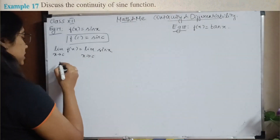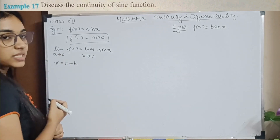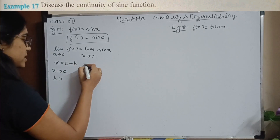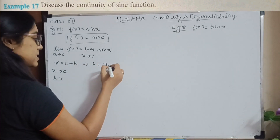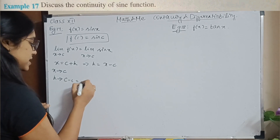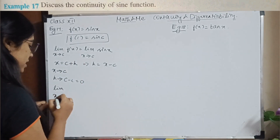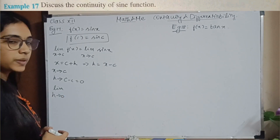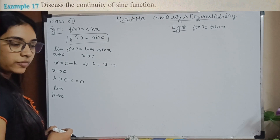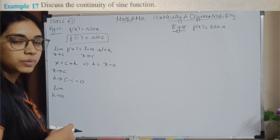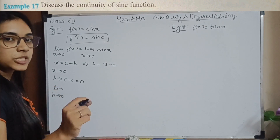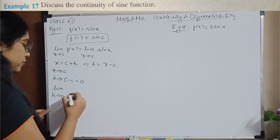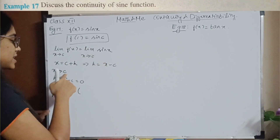Instead of directly taking sin X, I am going to replace X with C plus H. The condition is: when X tends to C, H = X minus C tends to 0. So I change the variable: the limit as X tends to C becomes the limit as H tends to 0. This approach is from the first principle of derivatives.